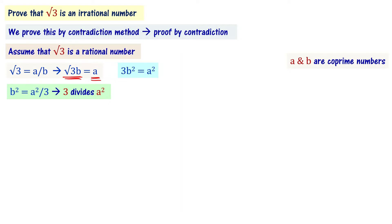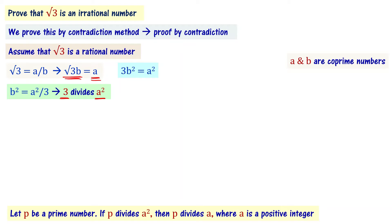This means 3 divides a squared. Recall the statement from real numbers: let p be a prime number; if p divides a squared, then p also divides a, where a is a positive integer. Since 3 is a prime number and 3 divides a squared, it follows that 3 divides a also.